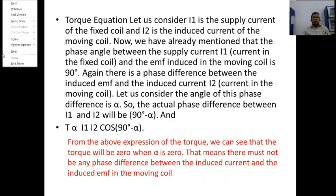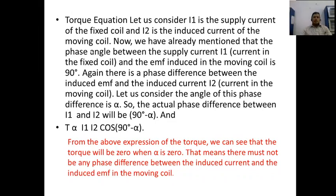The actual phase difference between I1 and I2 will be 90 degrees minus alpha, and the torque equation is given by T ∝ I1 × I2 × cos(90° − α). From this expression we can see that the torque will be zero when alpha is zero, meaning there must be no phase difference between the induced current and the induced EMF of the moving coil.